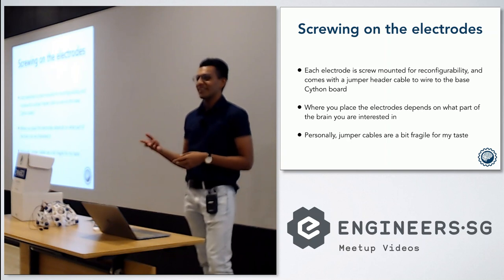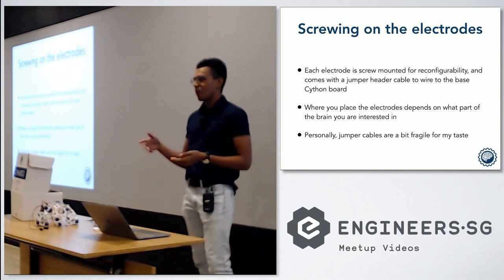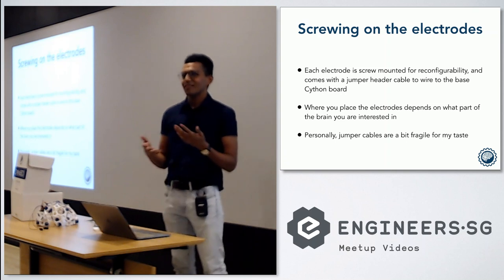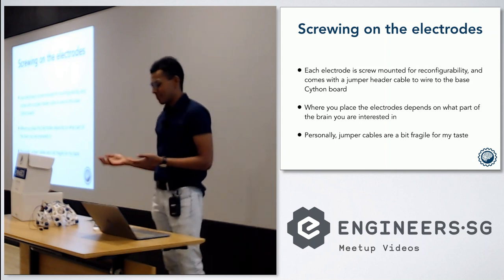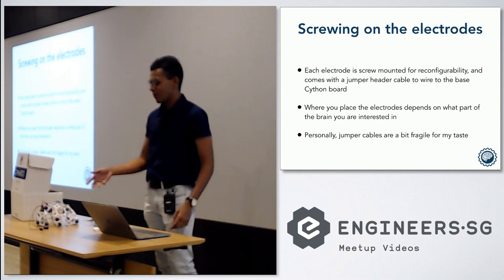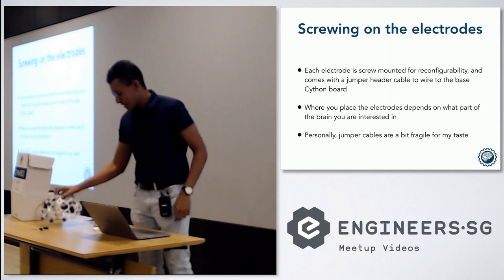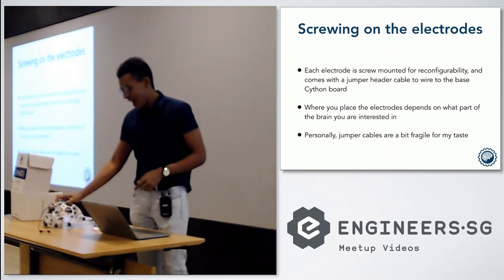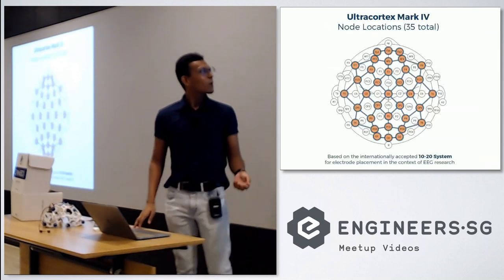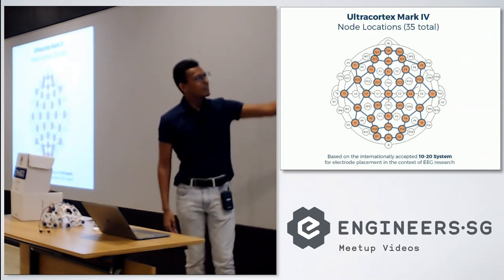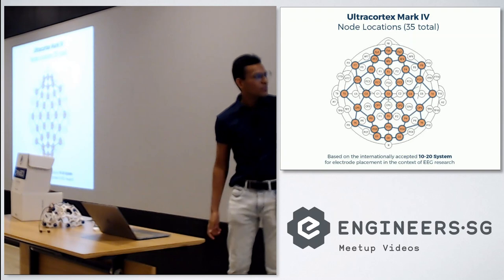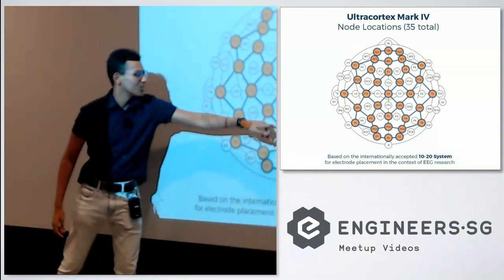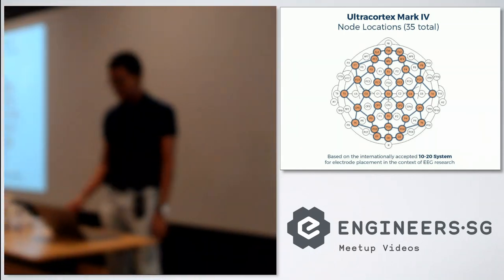Where you actually place the electrodes will determine what kind of data you can get from your headset. For example, if you're going to get motor-related data, you'd put them near the motor cortex. If you want higher-level emotional data, you might put them in the prefrontal cortex. It really depends on your electrode arrangement. Also a quick note: they really should not use jumper cables for this part of the electrode — I have a feeling it'll break very easily. The larger Ultracortex Mark IV comes with a 35 total electrode arrangement. The highlighted ones are where you can place them. I have them in a standard configuration — three here, two here, two there, and the back two.